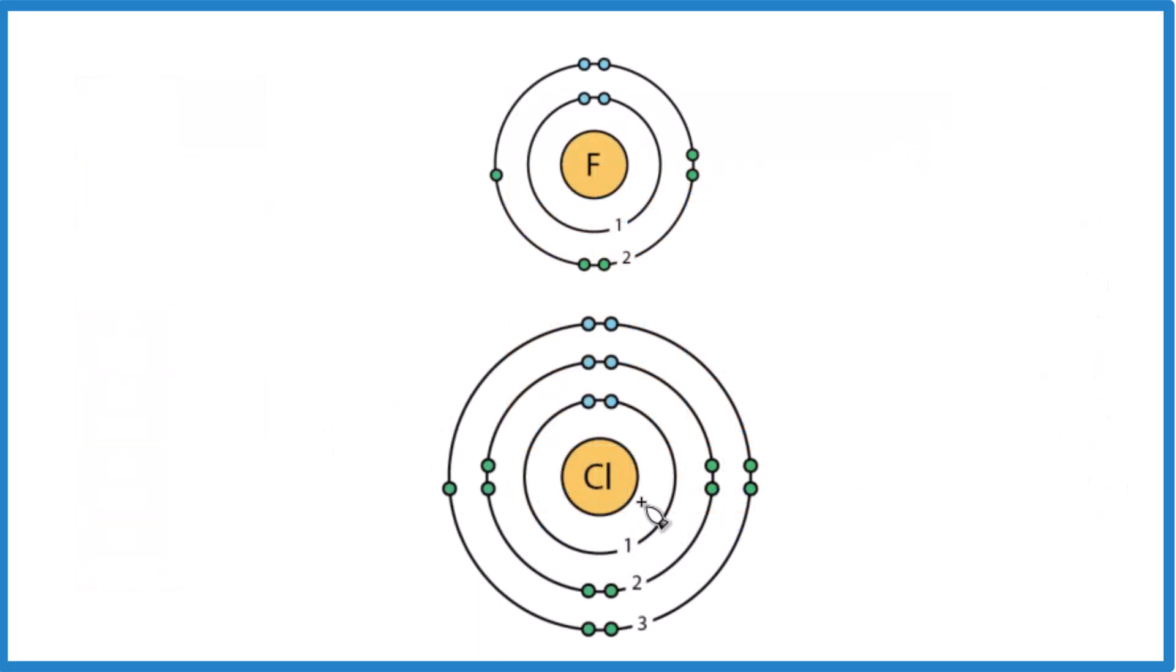Fluorine is above chlorine on the periodic table. Remember, it's the most electronegative. We're going down a group here and you can see we added an energy level. We have one, two here. We have one, two, three with chlorine.